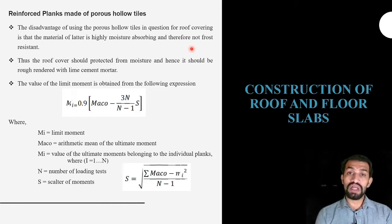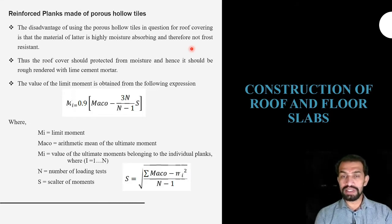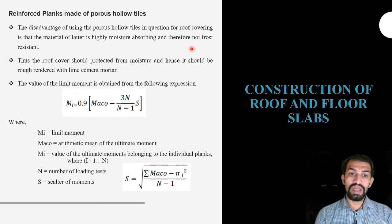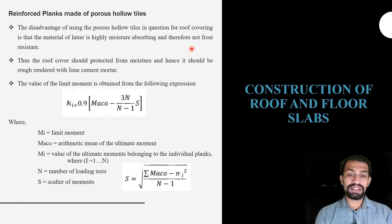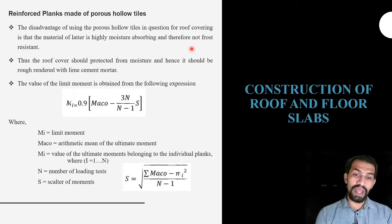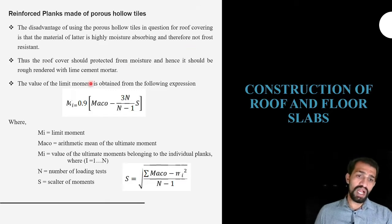To prevent moisture retention, a cement mortar with a lime mixture is applied. Lime allows water to flow off the roofing members rather than being retained. For the limiting moment of these sections, the formula is: Mi = 0.9 × [Maco − 3n / (n − s)], where s = √(Σ(Maco − Mi)² / (n − 1)).